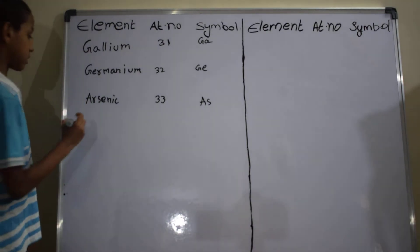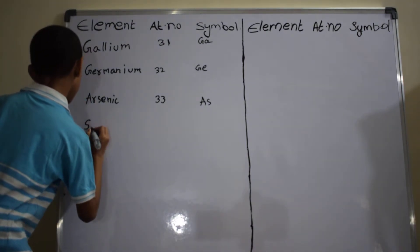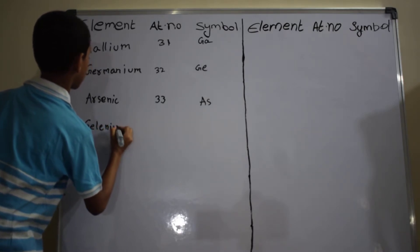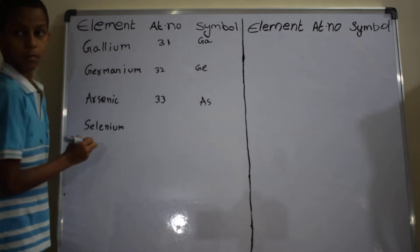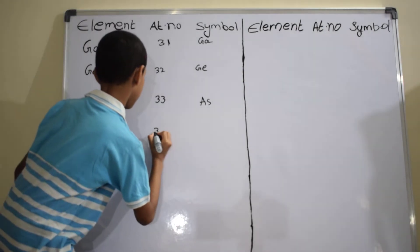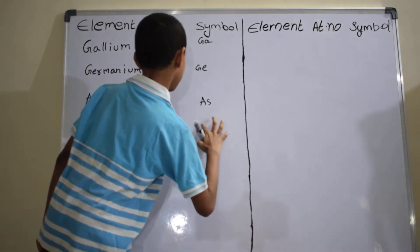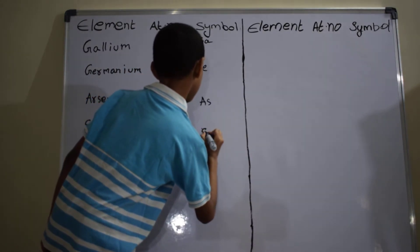Next element is selenium, S-E-L-E-N-I-U-M. Atomic number is 34. Symbol is Se.